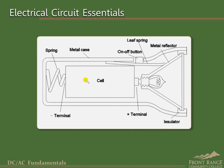Now we will look more closely at how current moves through the circuit. The battery sets up the potential difference between its positive and negative terminals. Electrons, being negatively charged particles, are repelled from the negative terminal of the battery and move away through the conductors — including the metal spring and case, the metal leaf spring in the switch, and the metal reflector. Finally, the current flows through the load and back to the positive terminal of the energy source.